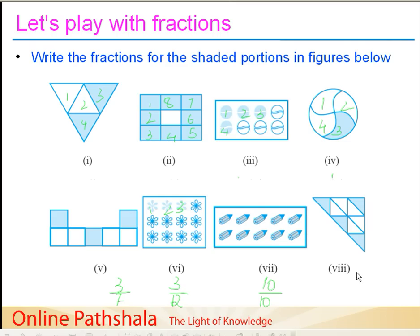Now the eighth figure. How many equal parts do we have? We count 1, 2, 3, 4, 5, 6, 7, 8, and 9 — let's count again: 1, 2, 3, 4, 5, 6, 7, 8, and 9. So our denominator is 9. And how many shaded parts do we have? 1, 2, 3, and 4 — let me write it again for clarity: 1, 2, 3, and 4. So the numerator is 4 and the fraction is 4 by 9.